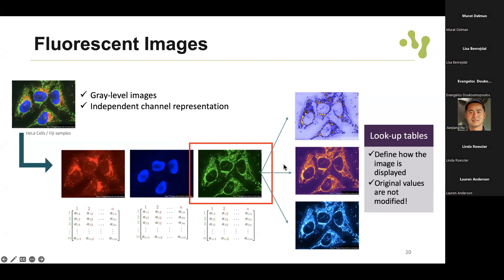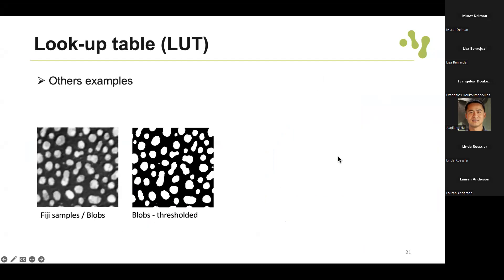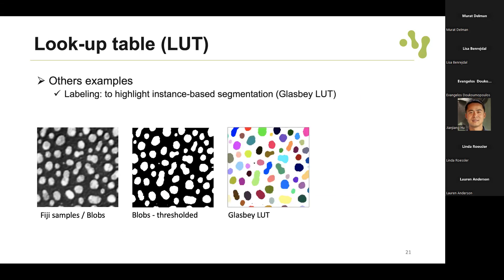Why would we change the representation? There are different reasons. We can have a thresholded image which is a segmentation result, showing background and foreground - a lookup table showing the blobs and the background. Besides that, changing the lookup table can be used when labeling components to highlight instance-based segmentation. Besides segmenting each blob, we also want to characterize them individually, so using a lookup table that labels each individual component in a specific color helps us visualize the data, especially when you have clustered objects like cells or nuclei.